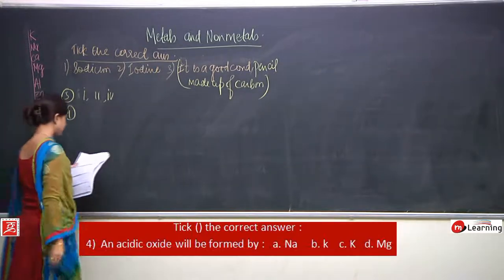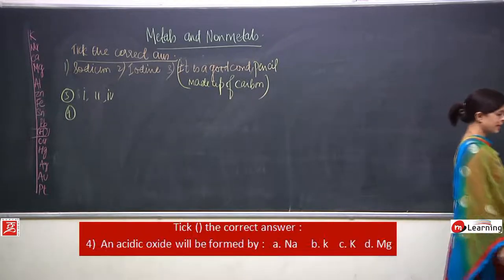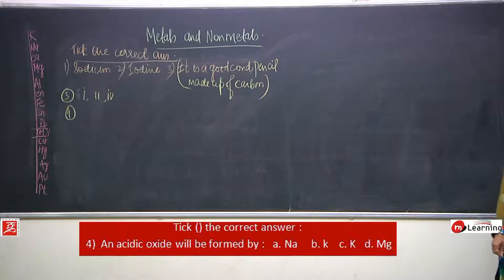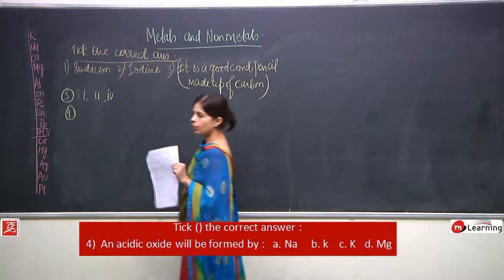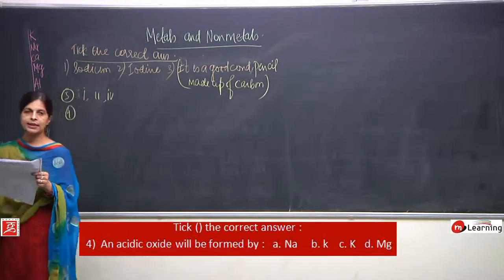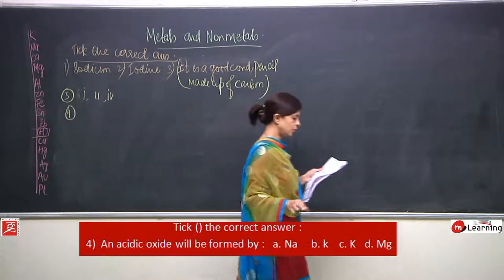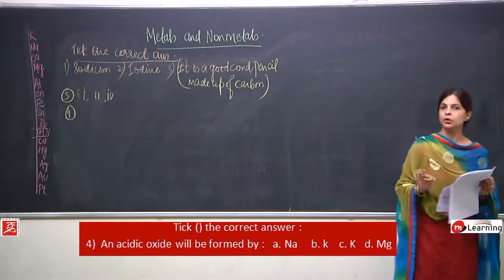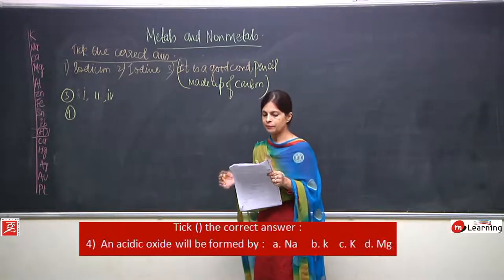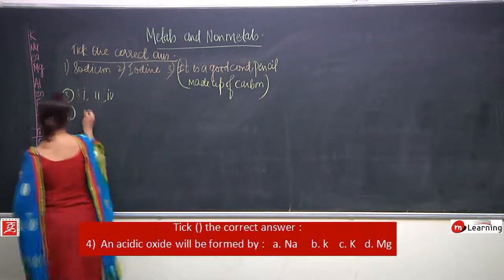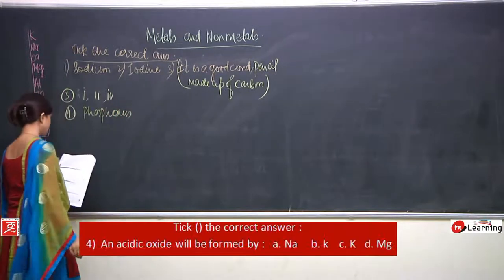Fourth: an acidic oxide will be formed by — see, non-metals form acidic oxides. Sodium is a metal, no. Potassium is a metal, no. Magnesium is a metal, no. What is left is phosphorus. Is phosphorus a non-metal? Yes. So obviously phosphorus is going to form an acidic oxide.